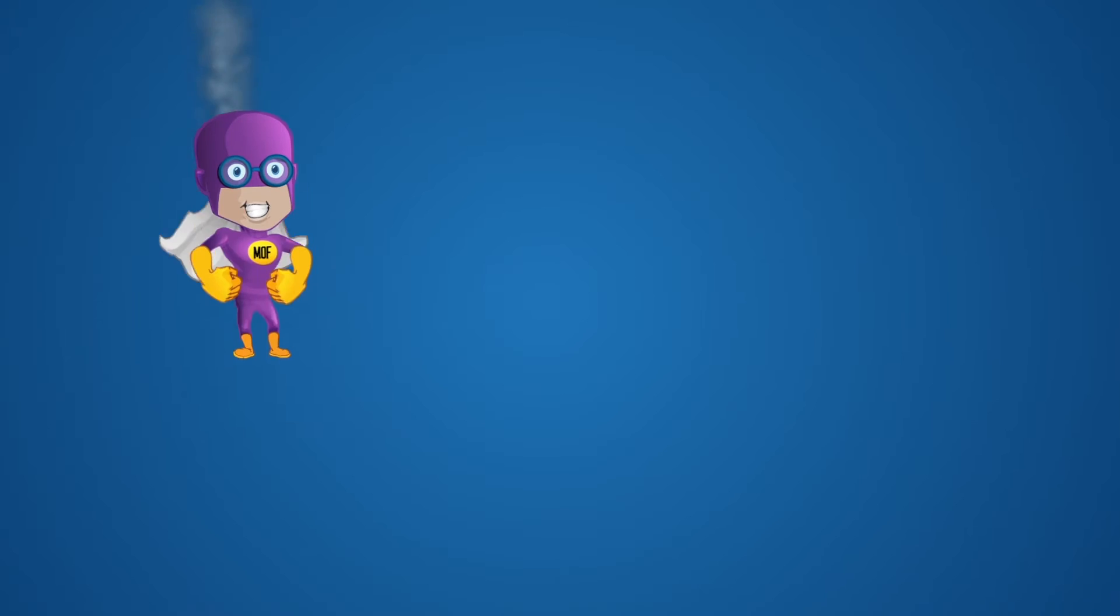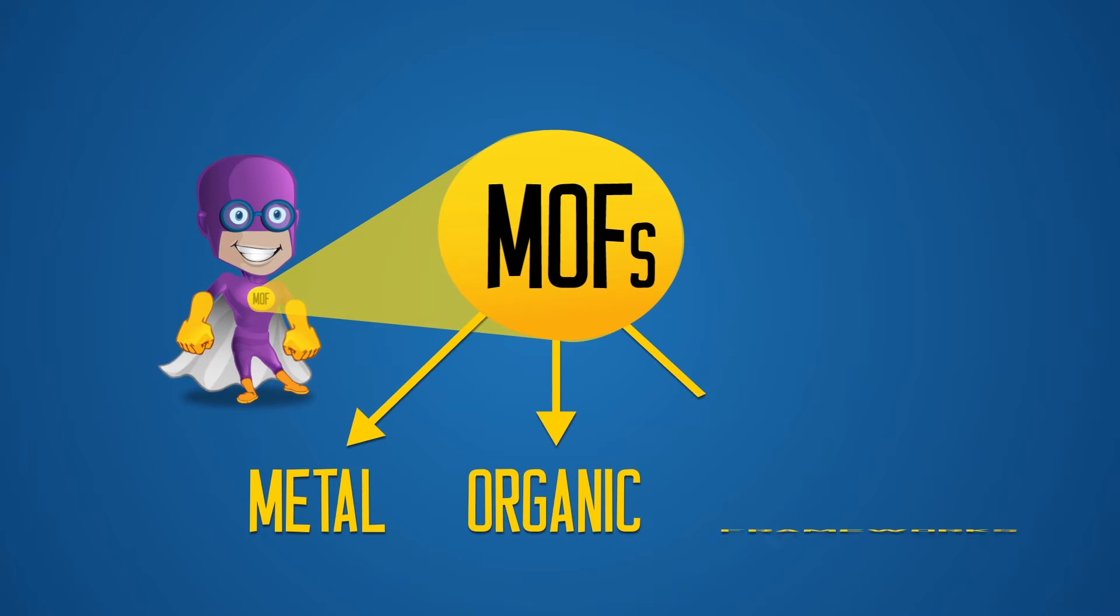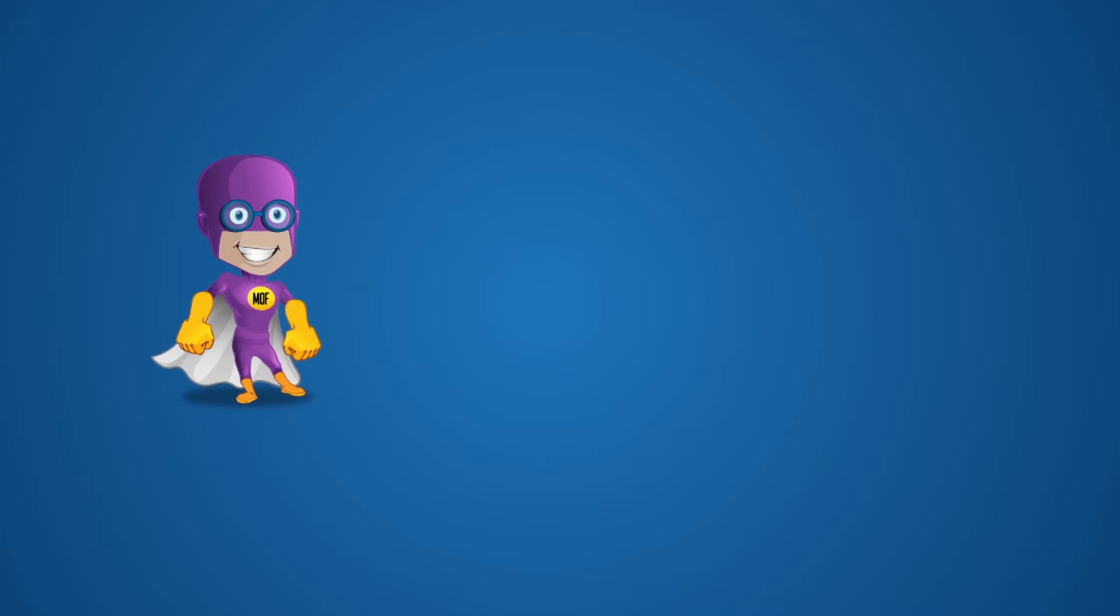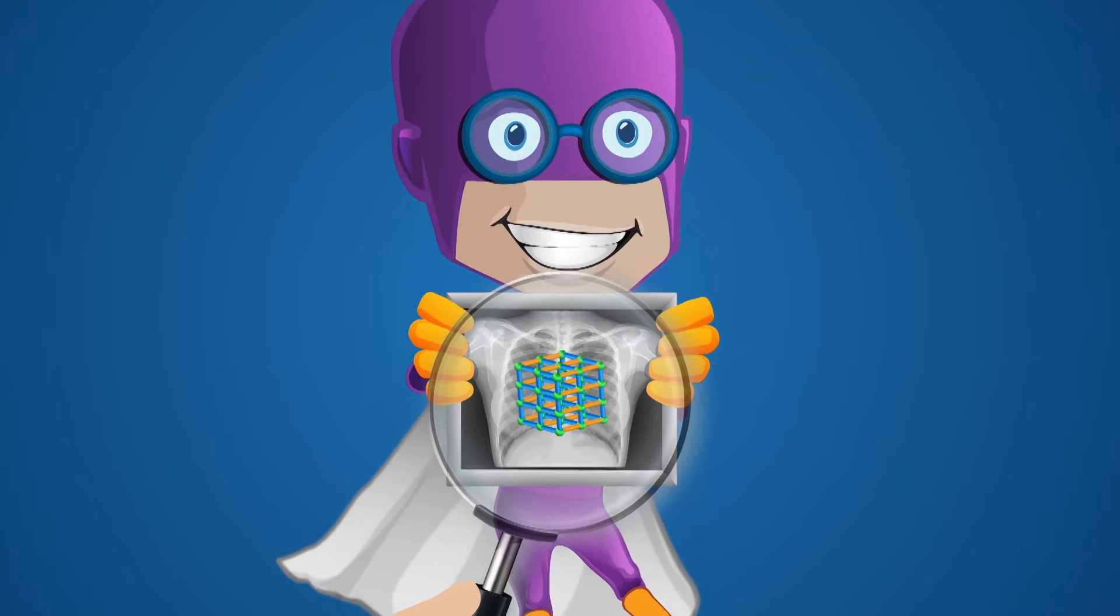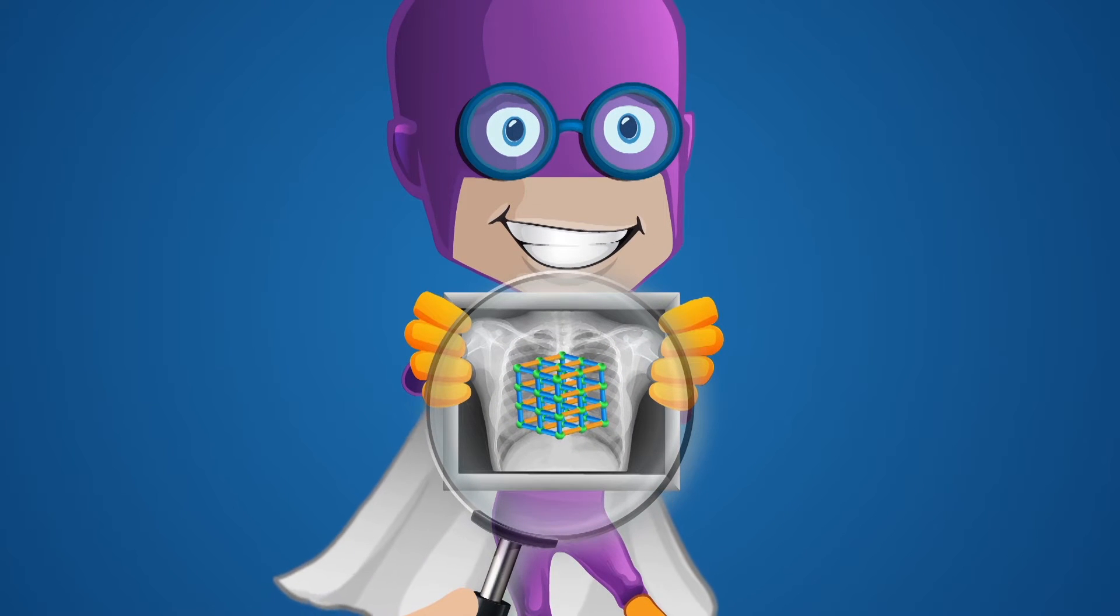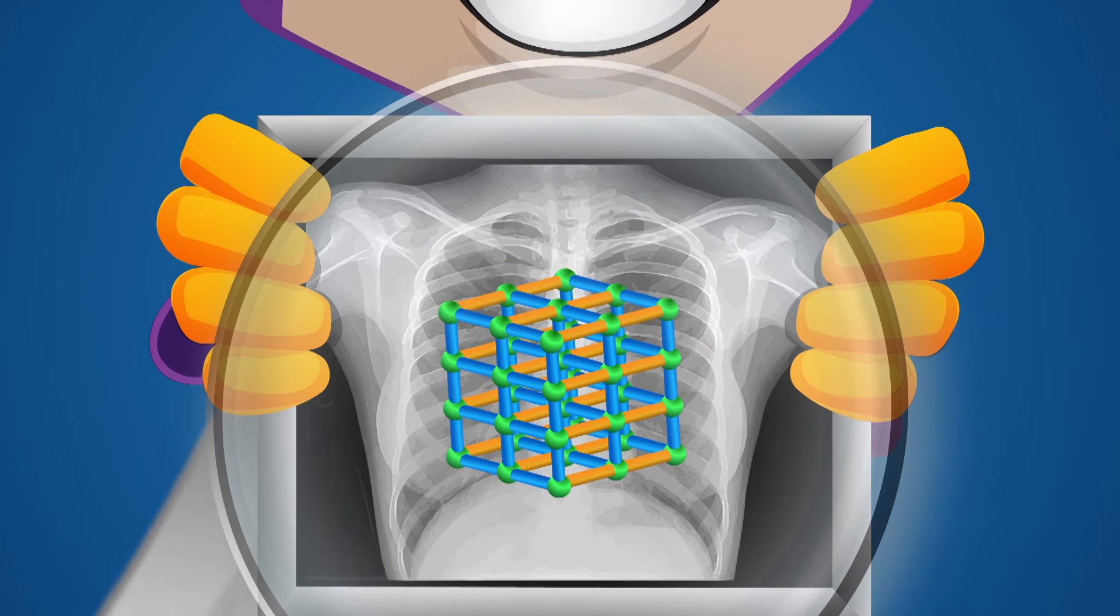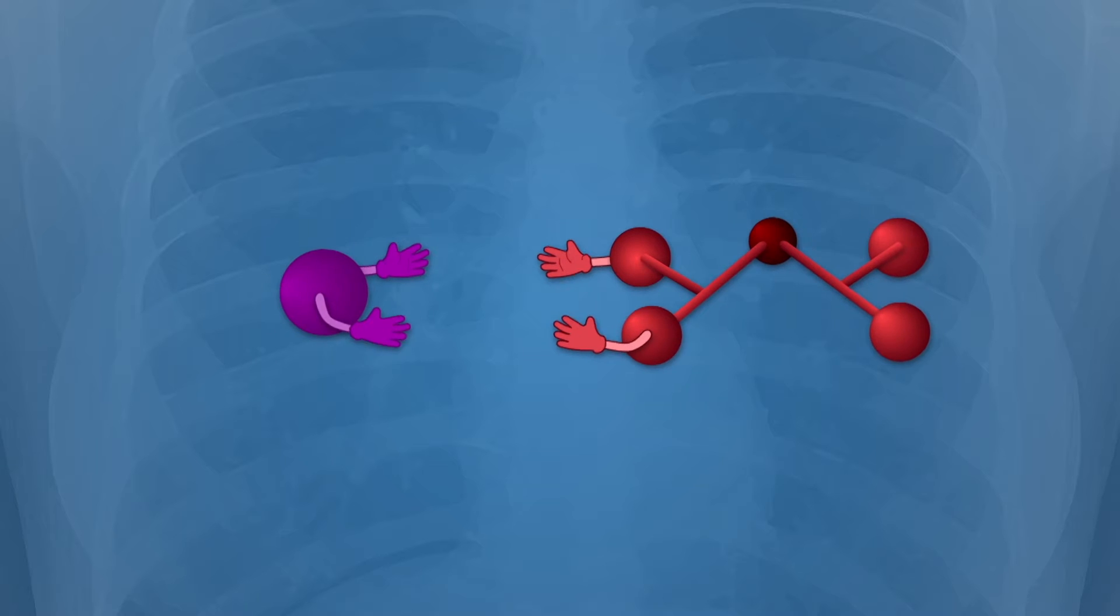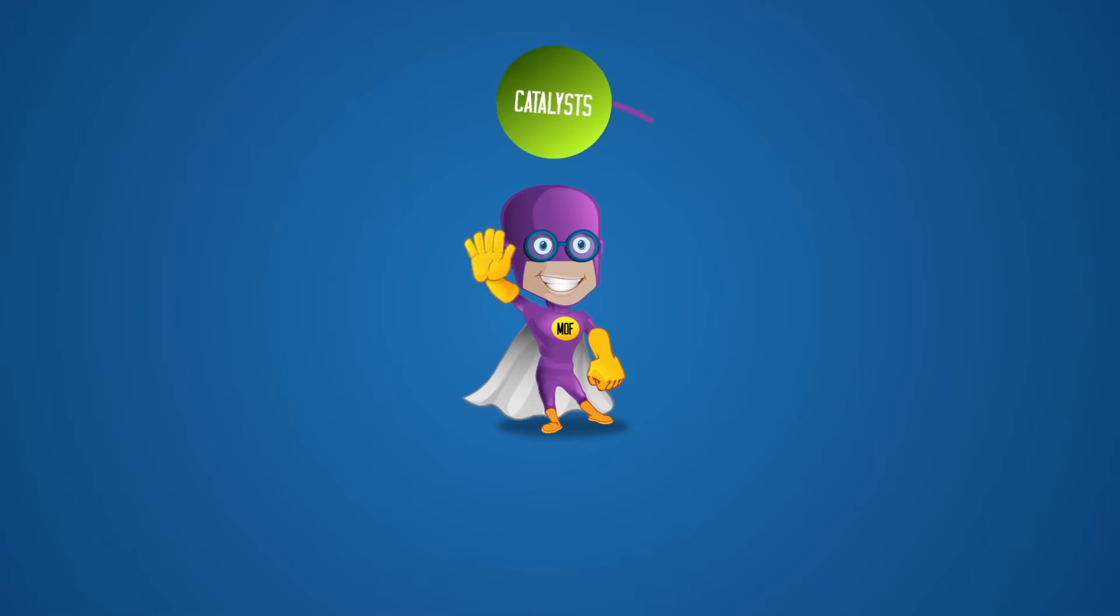First, let me remind you what Metal Organic Frameworks are and their impact in material science. Metal Organic Frameworks are a new class of crystalline material built from two main components: metal connectors and organic linkers, which together give rise to different polymeric structures with different dimensionalities.